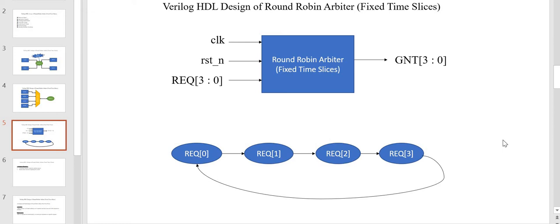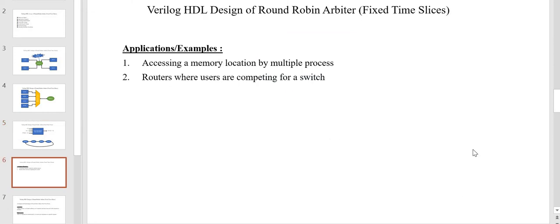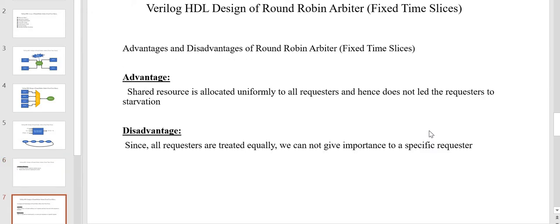The round robin scheduling algorithm works like this: on startup or once the device is out of reset, request 0 gets the highest priority, then request 1, then request 2, then request 3, after which priority returns to request 0, following this structure cyclically. Applications include multiple processors trying to access a common shared resource, and routers where multiple users compete for a switch.